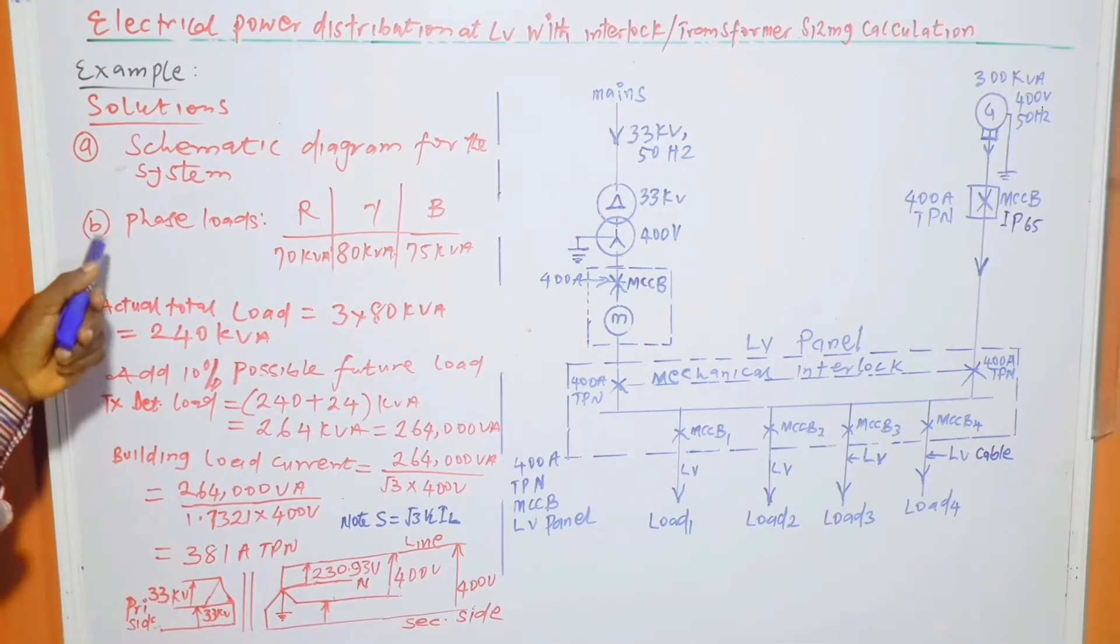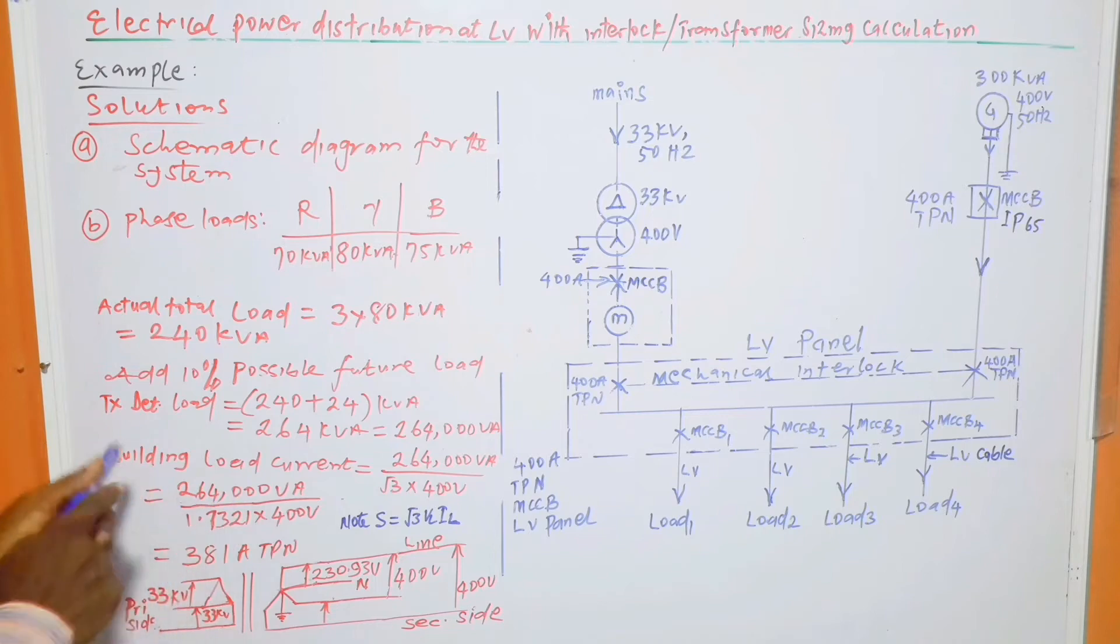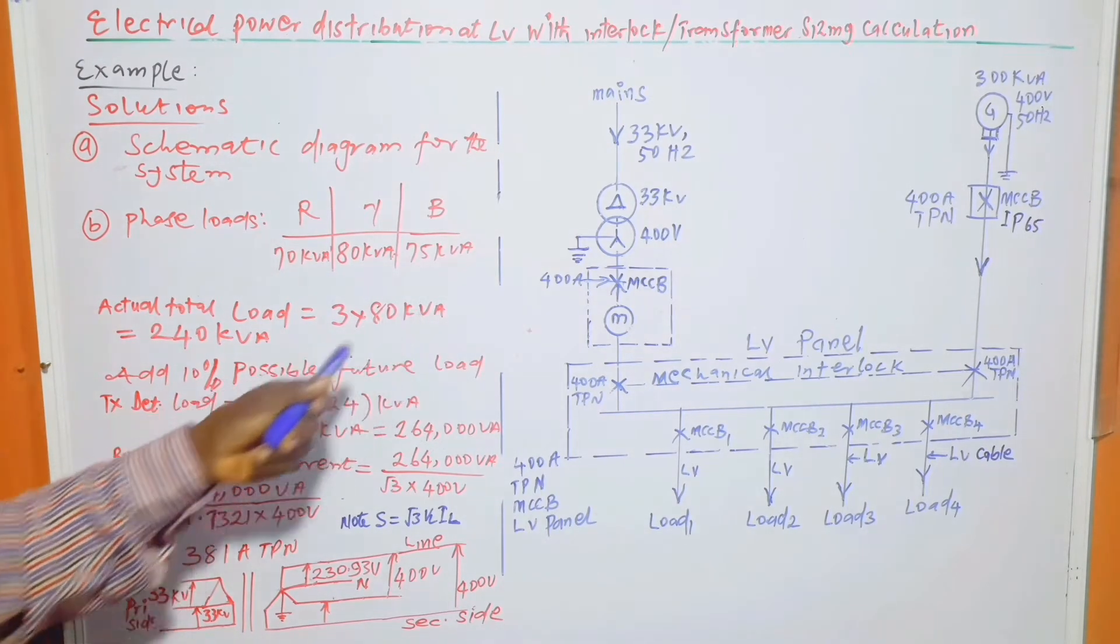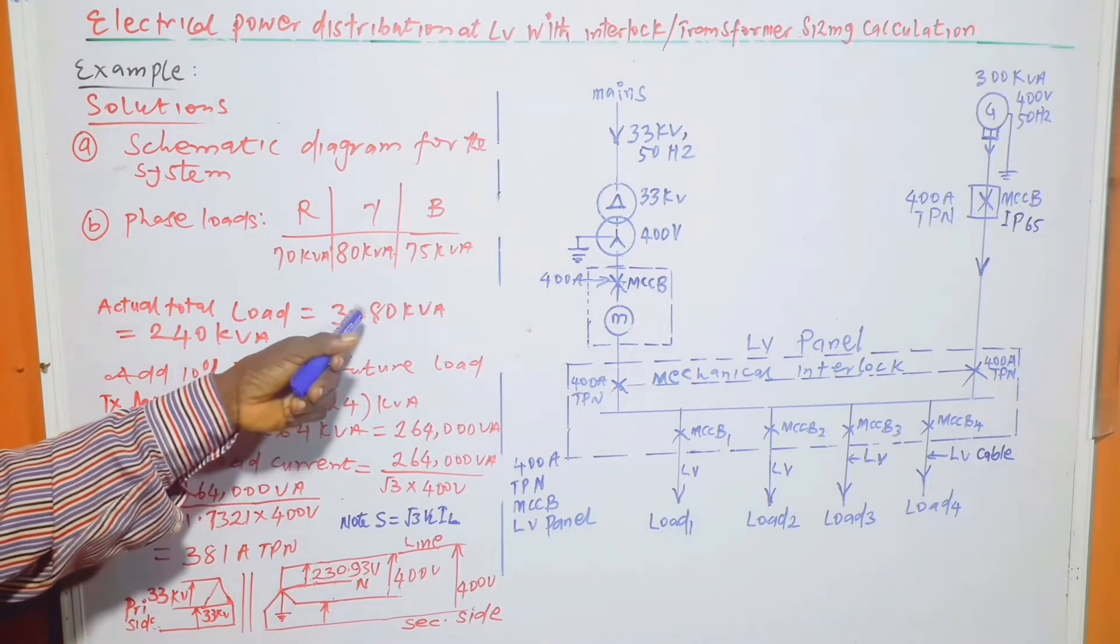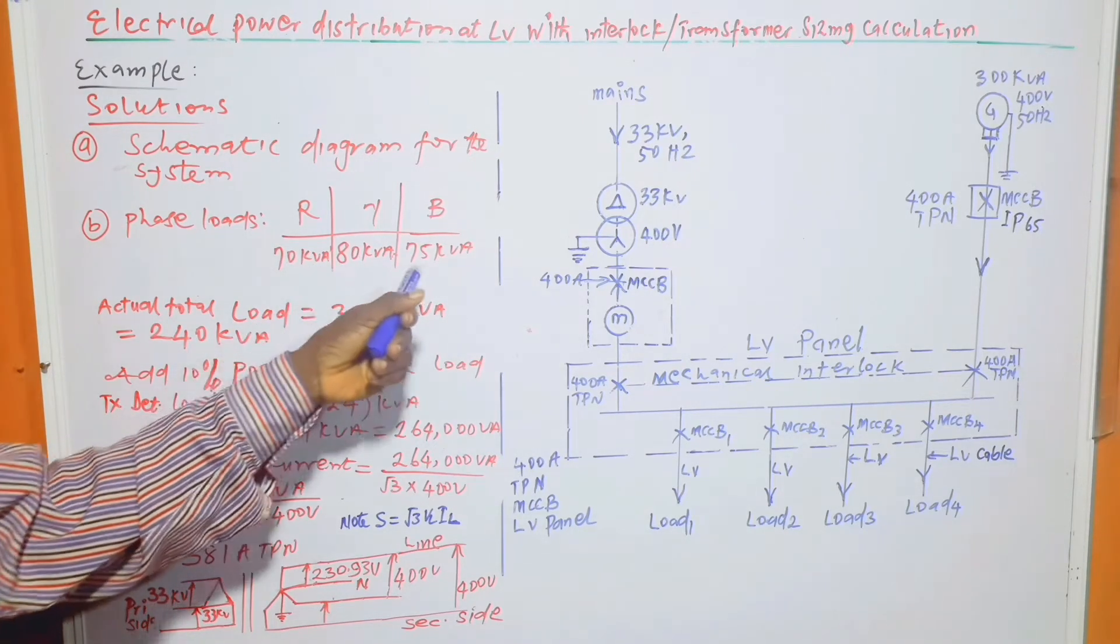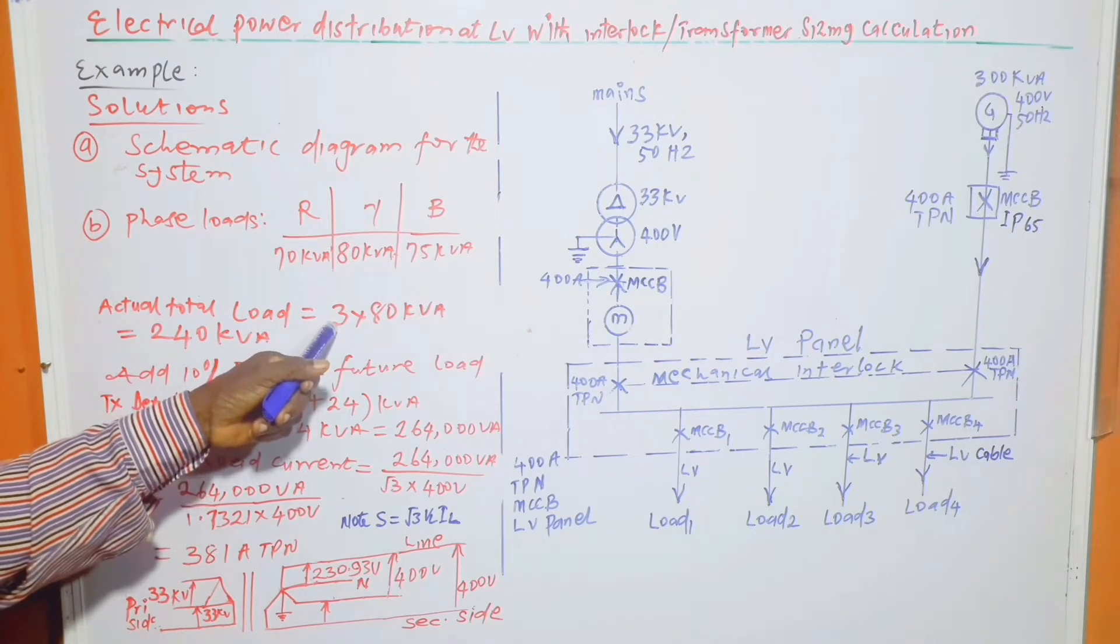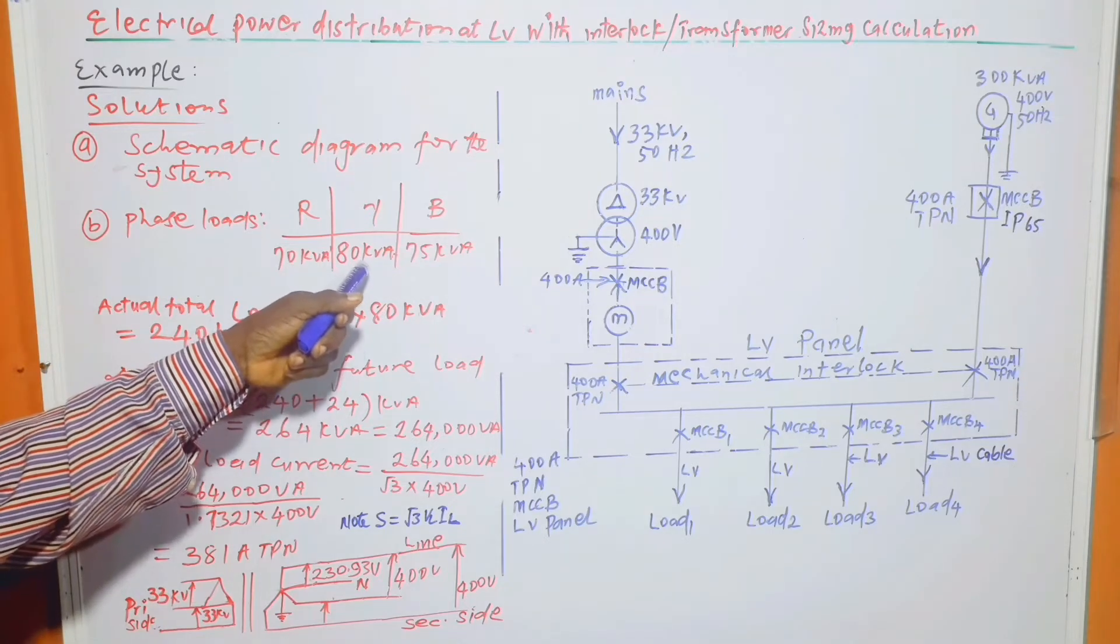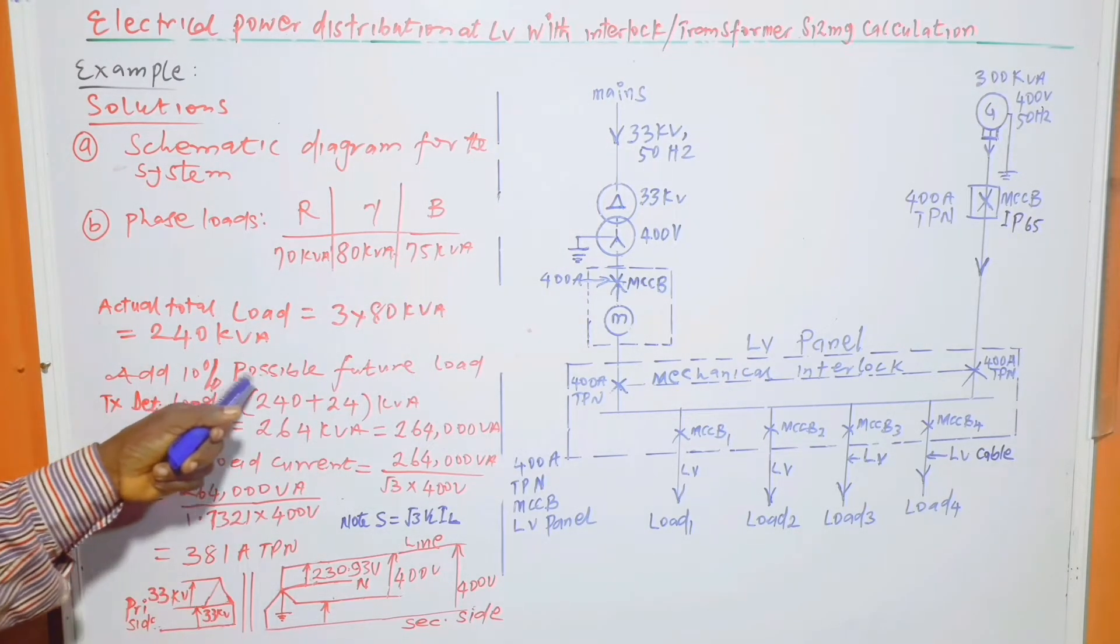Now, part B: phase loads are red phase 70 kVA, yellow phase 80 kVA, blue phase 75 kVA. Actual load is equal to 3 times 80 kVA, which is equal to 240 kVA. This 80 kVA is the highest phase load, as I explained in one of my previous videos having to do with transformer load calculation. So in this situation, you multiply 3 by the highest phase load, which is 80 kVA. You shouldn't take the algebraic sum of the phase loads.